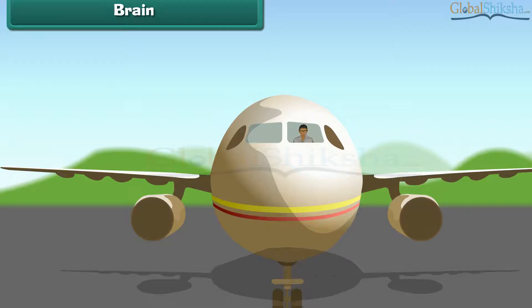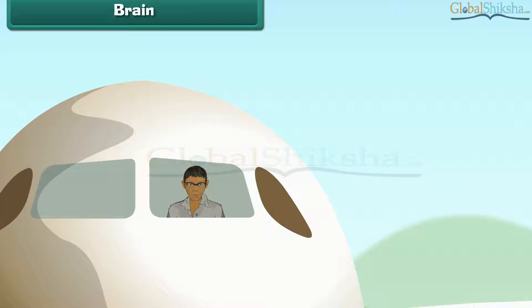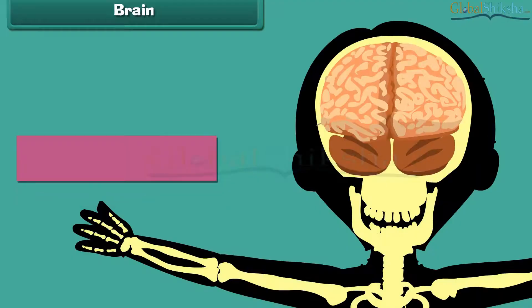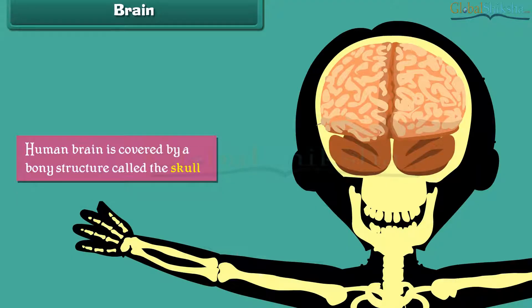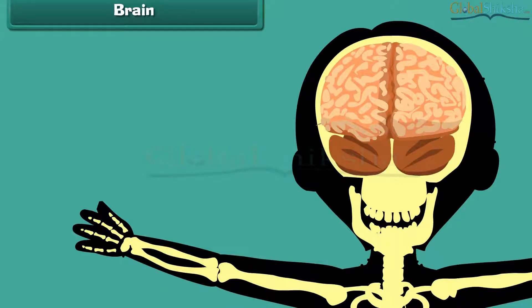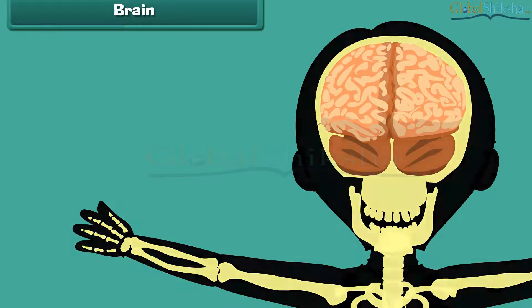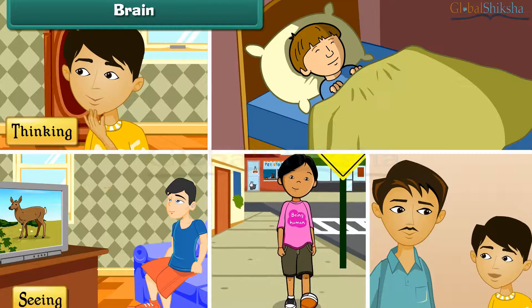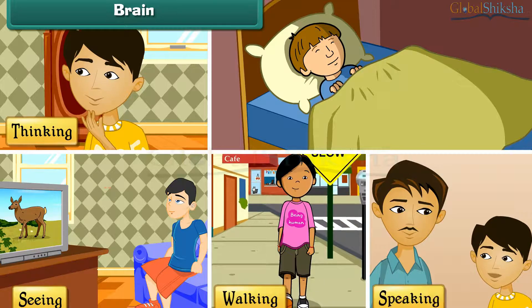Brain: Just as the pilot is the boss of an aeroplane in flight, the human brain is the boss of the human body. The human brain is covered by a bony structure called the skull. The brain controls all the activities of the human body, such as thinking, seeing, walking, speaking, and even sleeping.